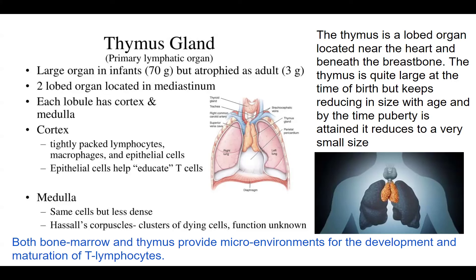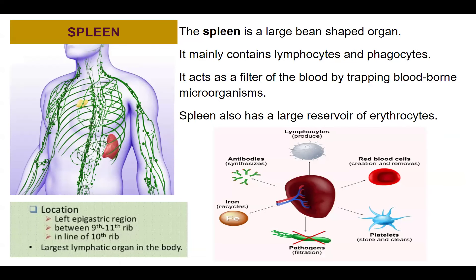The spleen is a very important secondary lymphoid organ. It is bean-shaped and present in the epigastric region just above the stomach, between the 9th and 11th rib, almost in line with the 10th rib. The spleen is the largest lymphoid organ in the body. It consists of lymphocytes and phagocytes, and acts as a filter of the blood by trapping blood-borne microorganisms. The spleen also has a large reservoir of erythrocytes.